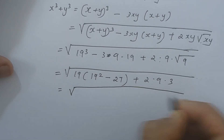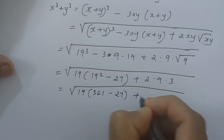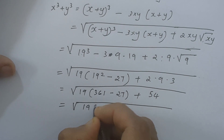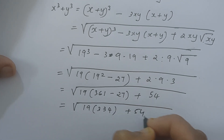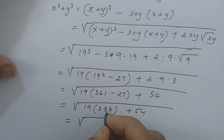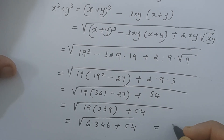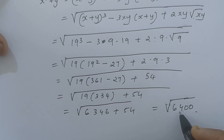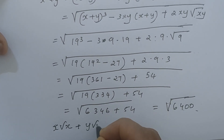2 times 9 times 3 is 54. So we get the square root of 19 times (361 minus 27) plus 54, which is the square root of 19 times 334 plus 54, which equals the square root of 6400. The square root of 6400 is the square root of 64 times 100, which is 8 times 10, that is 80. So we got x√x plus y√y equals 80.